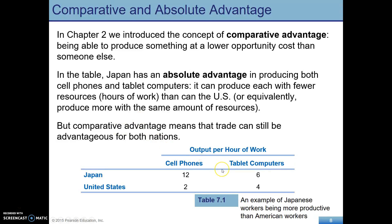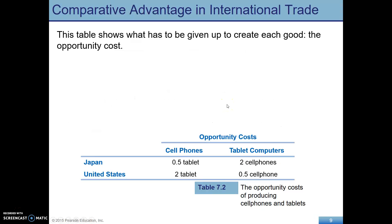Let's look at an example — pay careful attention to how things are labeled. This is output per hour of work. In Japan, an hour of work can produce 12 cell phones or 6 tablet computers. In the United States, an hour of work can produce 2 cell phones or 4 tablet computers. For comparative advantage, you're thinking lowest opportunity cost, and you should be comfortable calculating opportunity cost from a chart like this.